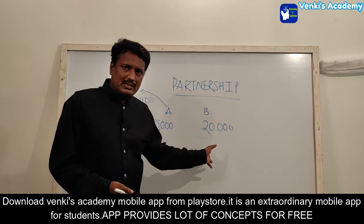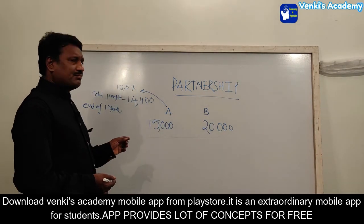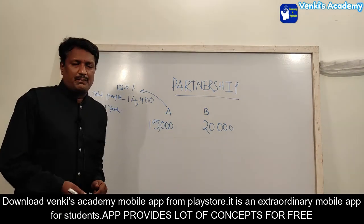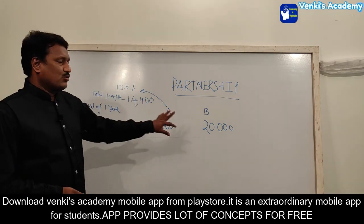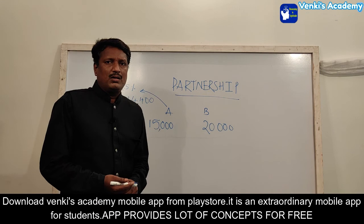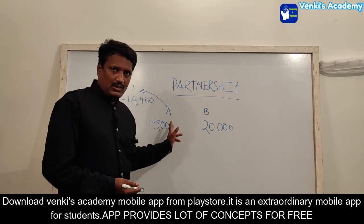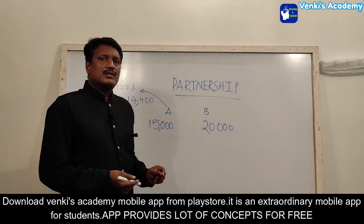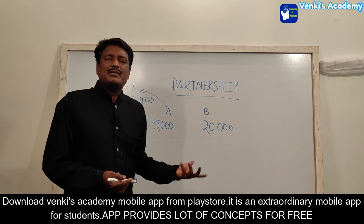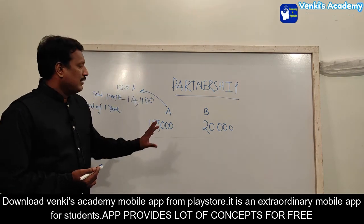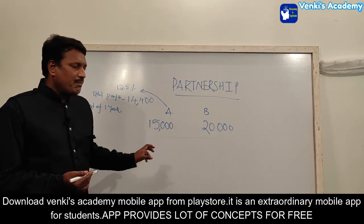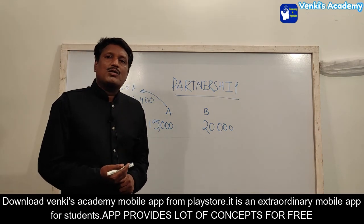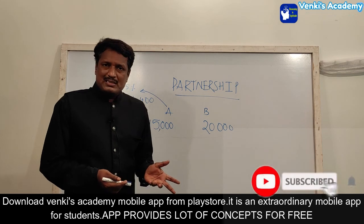In this business, the active partner does double the work. Over one year, the total profit may be, say, fourteen thousand four hundred. Because the active partner takes on extra risk and manages the business, they receive an additional amount — a salary or commission — on top of their investment-based share.